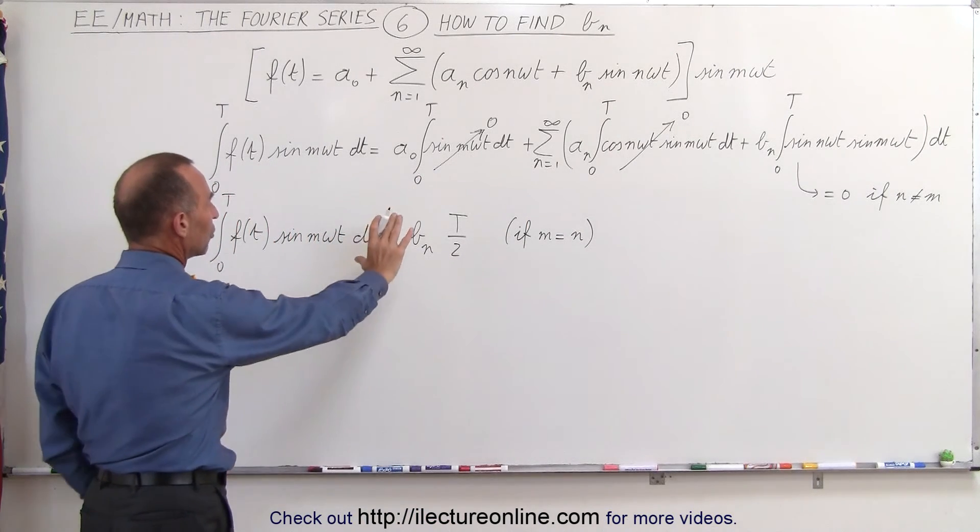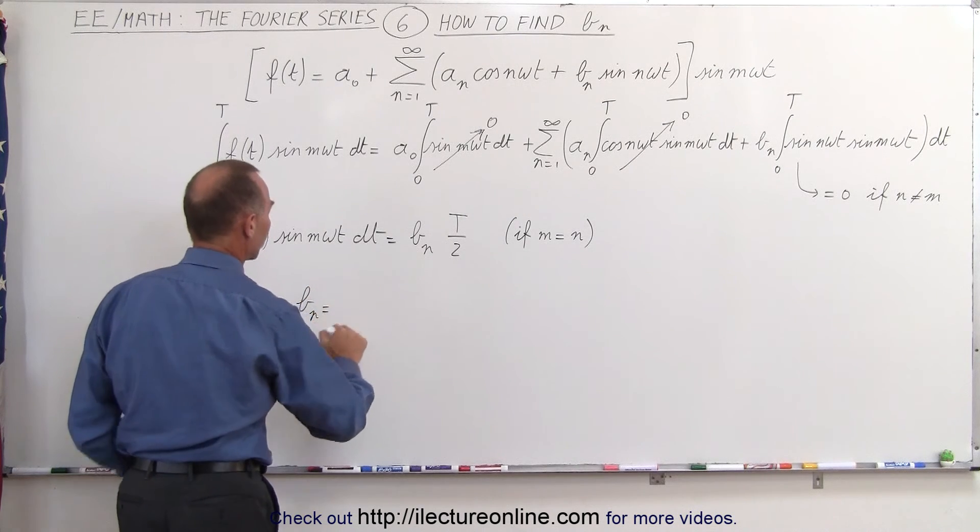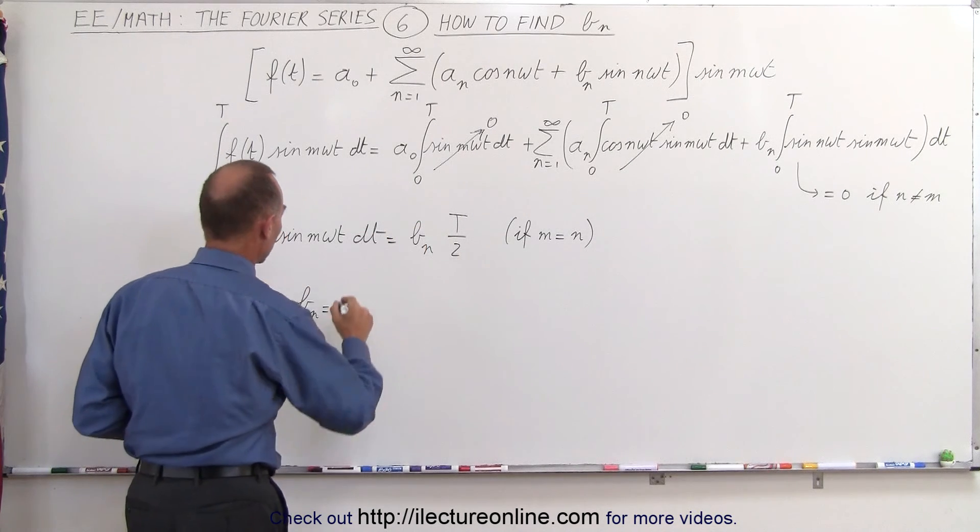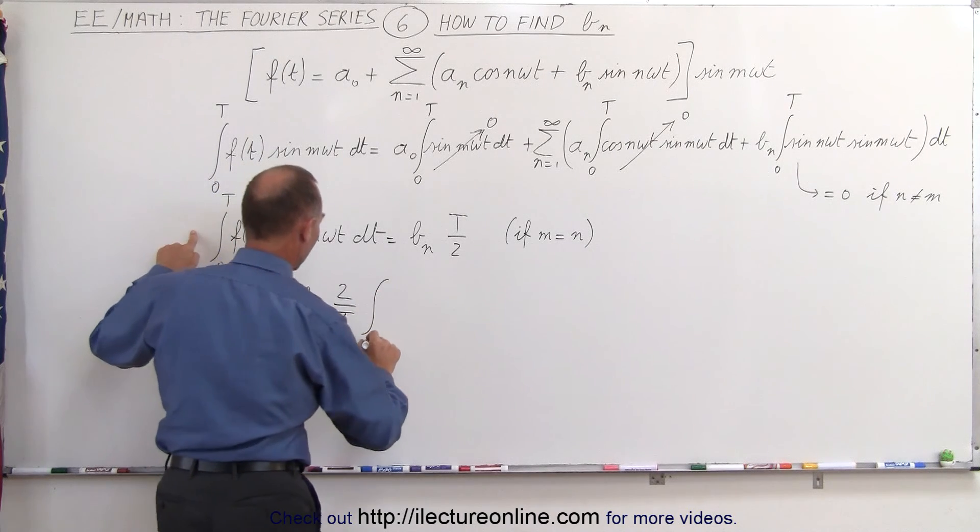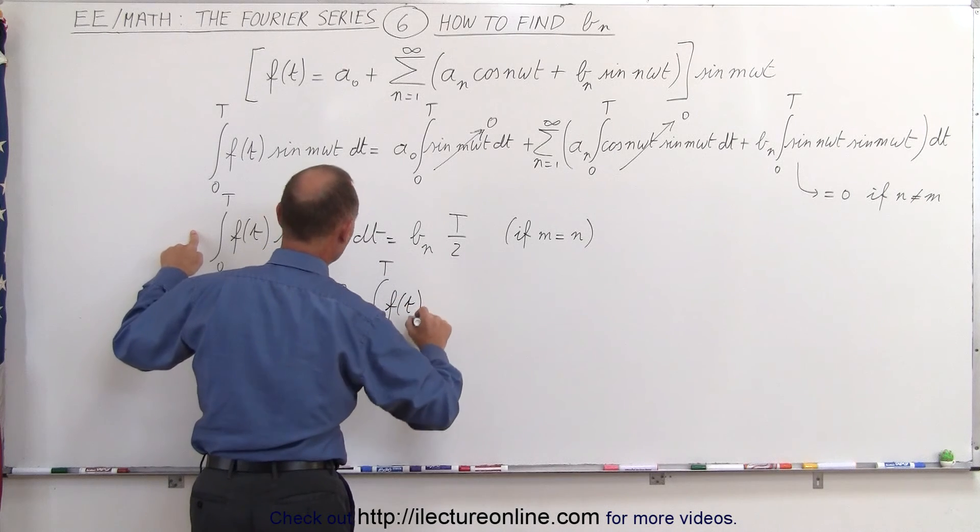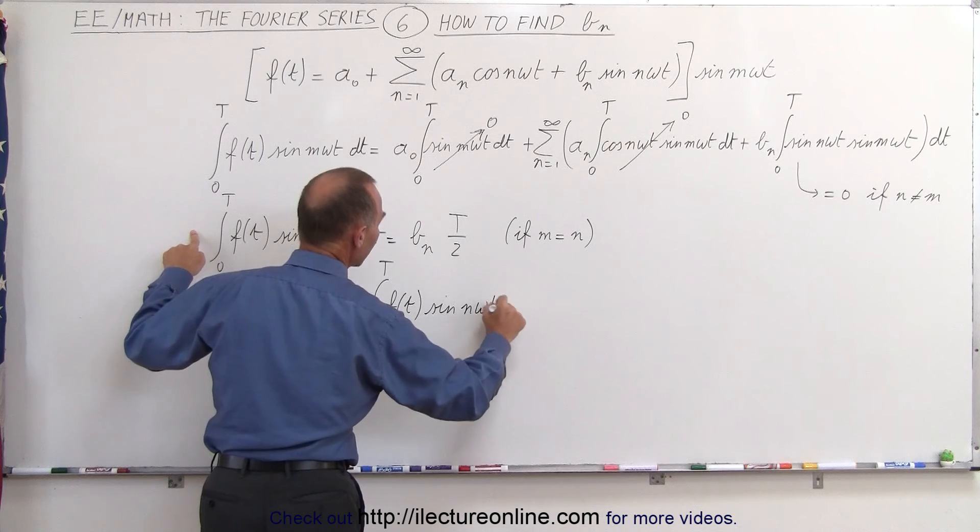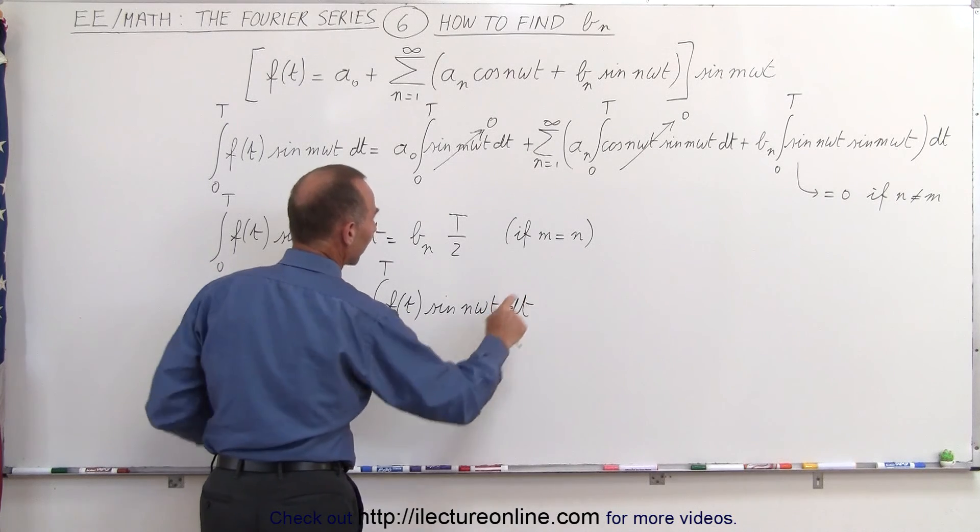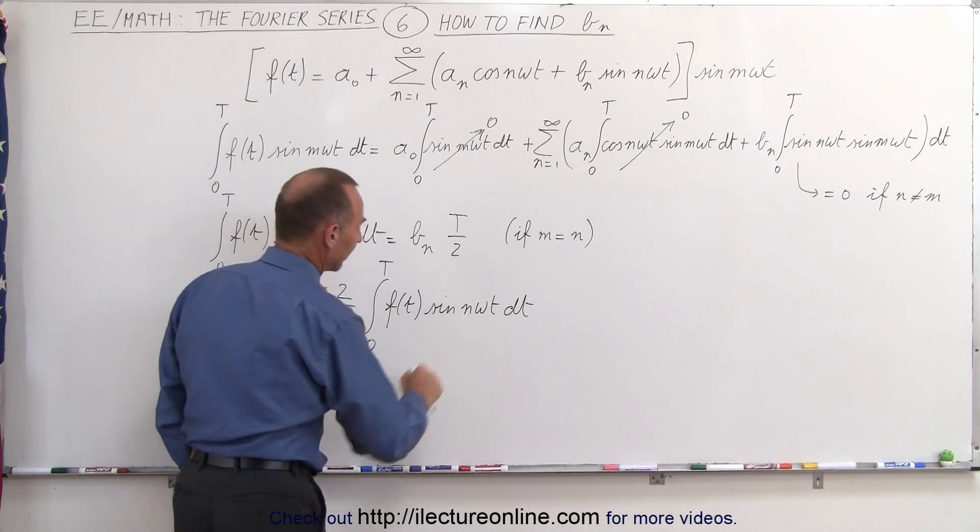So now that we have this, all we need to do is solve for b sub n. So b sub n will be equal to, multiplying both sides by 2 over T, times the left side, 0 to T, that's the integral of the original function, times the sine of n omega t dt.